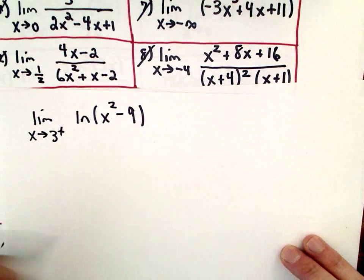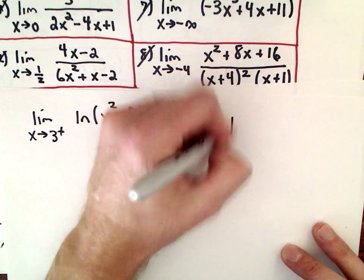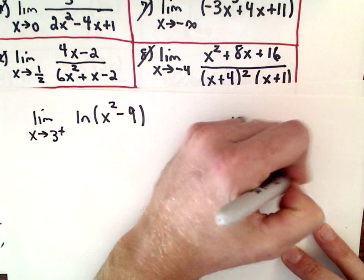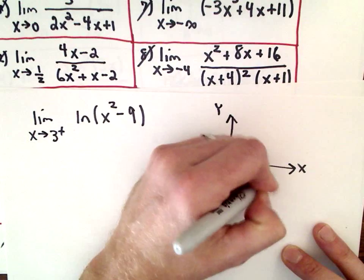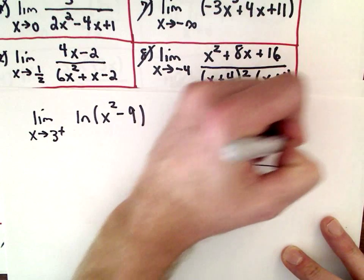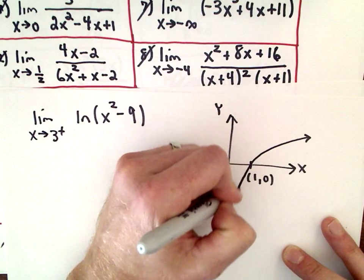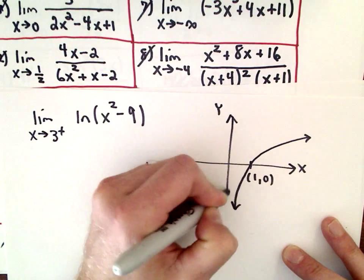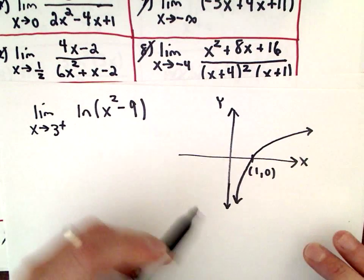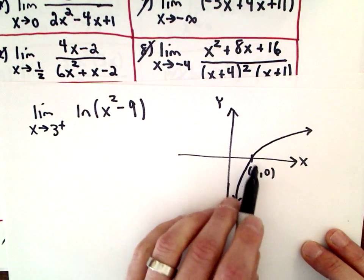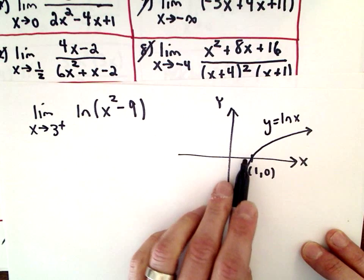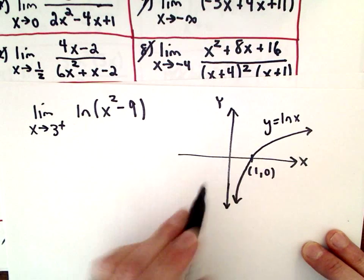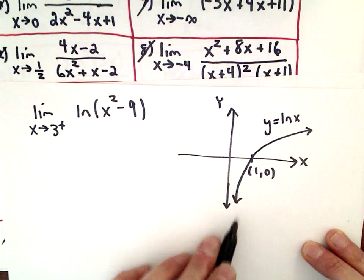One thing you would definitely want to remember is the graph of the natural logarithm. The natural logarithm goes through (1, 0). Here's y equals ln of x. As you get closer and closer to 0 from the right, the natural logarithm will just spike down to negative infinity.